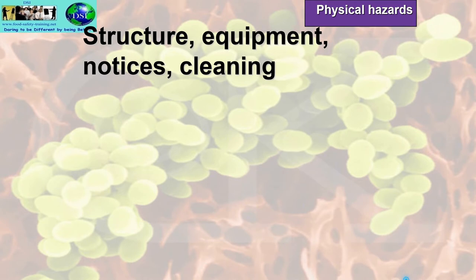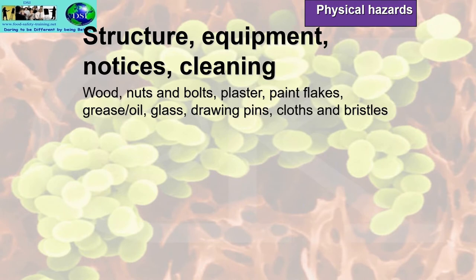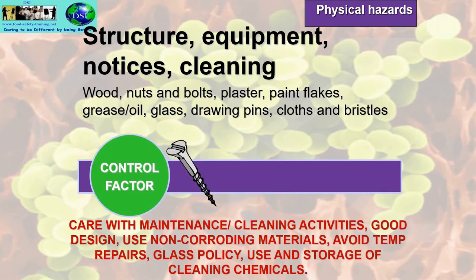From structure and equipment, physical hazards include wood, nuts and bolts, plaster, paint flakes, grease and oil, glass, drawing pins, cloths and bristles. Control factors include care with maintenance and cleaning activities, good design of food premises, use of non-corroding materials, avoiding temporary repairs, having a glass policy and a wood policy, and storing cleaning chemicals away from the food preparation area, only using them when food is not being prepared.